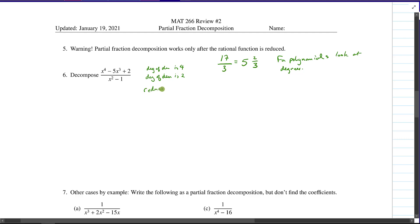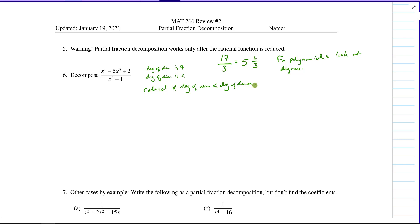So let's just say that this is reduced if the degree of the numerator is strictly less than the degree of the denominator. And so that's certainly not the case here. The degree of the numerator is 4, which is larger than 2, and certainly not less than 2.